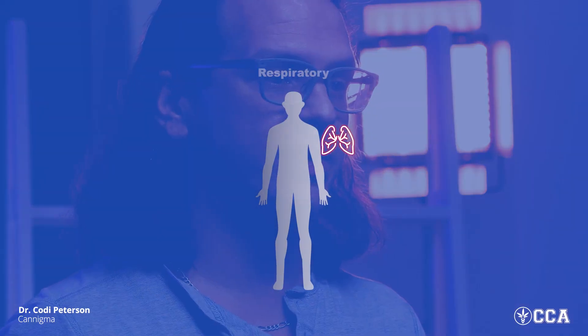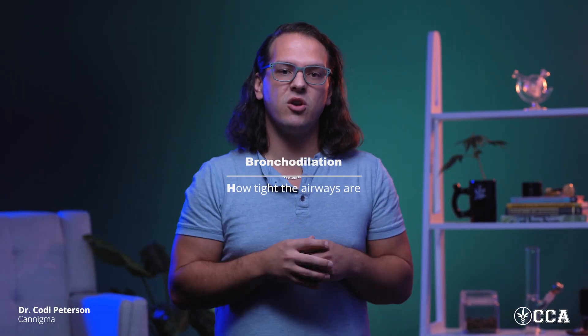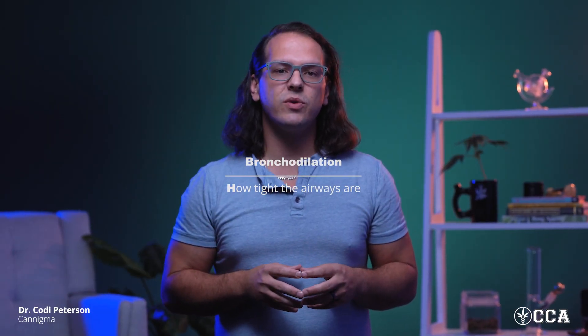When we look at the respiratory system — the system involved with helping us breathe — we can find the endocannabinoid system there as well. Within the lungs, the endocannabinoid system regulates something known as bronchodilation, or how tight the airways are. It's also heavily intertwined with the immune system present in the lungs to prevent foreign pathogens or particles from entering, and it mediates inflammation in the lungs.